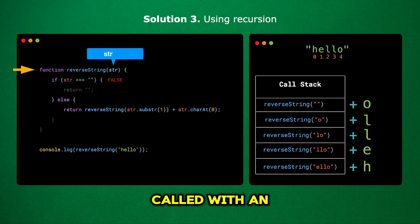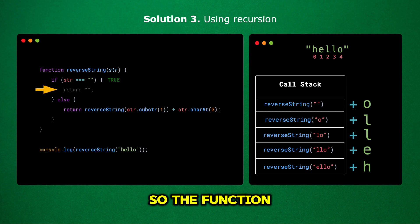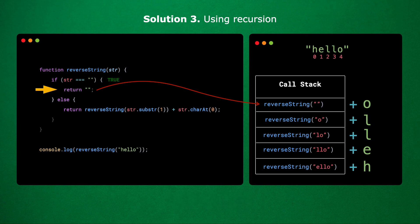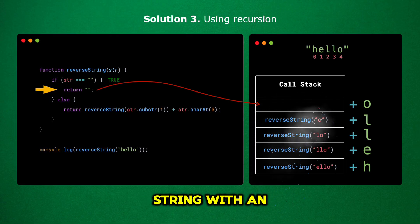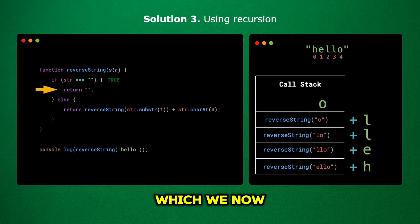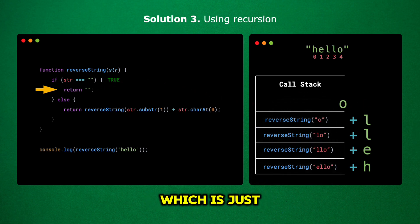Finally, the function is called with an empty string. This time, the if statement is true because the string is empty, so the function returns an empty string, which triggers the end of the recursion. Now that we've reached the base case, the recursive calls start to return values back up the call stack. The fifth call was waiting for the result of reverseString with an empty string, which is an empty string, so it returns empty string plus the letter 'O', which is just 'O'.